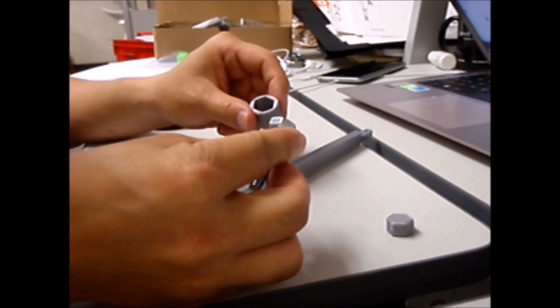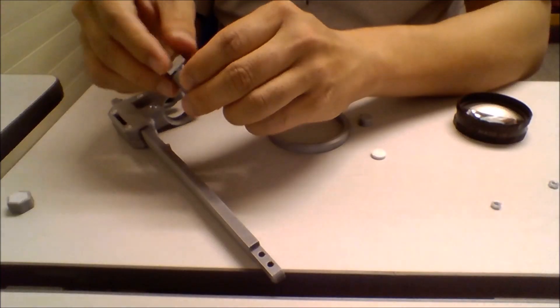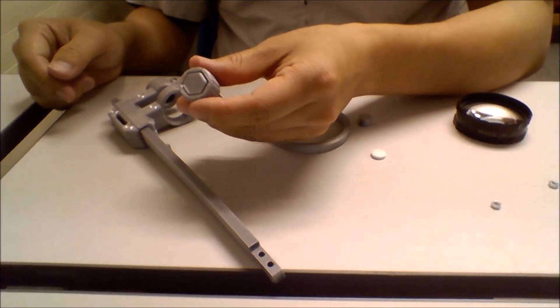Place the M8 bolt into the bolt cap and cover it with a cap insert. You'll need to glue this part together.